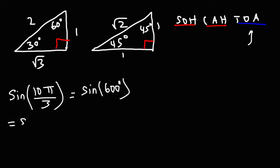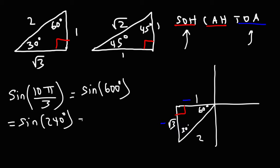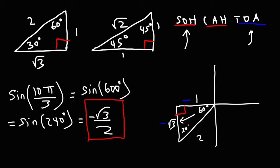Since 600 and 240 are coterminal, sine of 600 equals sine of 240. Drawing the reference angle at 240: from 180, 60 more gives 240, so the reference angle is 60 degrees. In quadrant 3, both x and y are negative. Across 60 is square root of 3 (negative), and across 30 is negative 1. The hypotenuse is 2. Sine equals opposite over hypotenuse: opposite to 60 is negative square root of 3. So sine of 10π over 3 equals negative square root of 3 over 2.